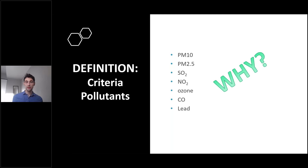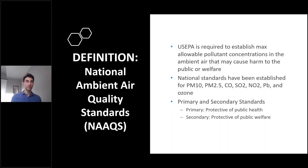Why are these pollutants grouped together and called criteria pollutants? Because the EPA set certain standards for them known as the National Ambient Air Quality Standards, or NAAQS. These standards were developed after the federal Clean Air Act required the EPA to establish a maximum allowable pollutant concentration in the ambient air that may cause harm to public health or welfare. The NAAQS consists of both primary standards, which are protective of public health, and secondary standards, which are protective of public welfare, including soil, vegetation, and structures.